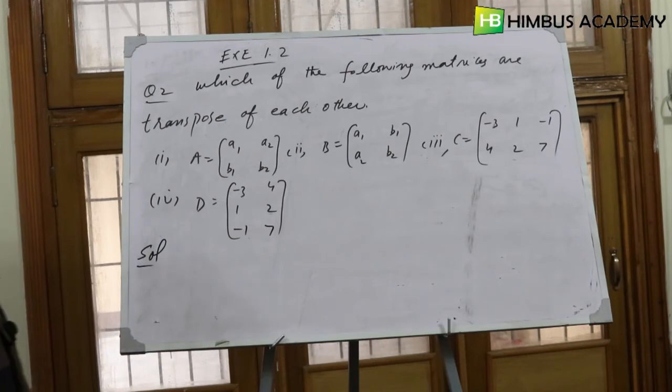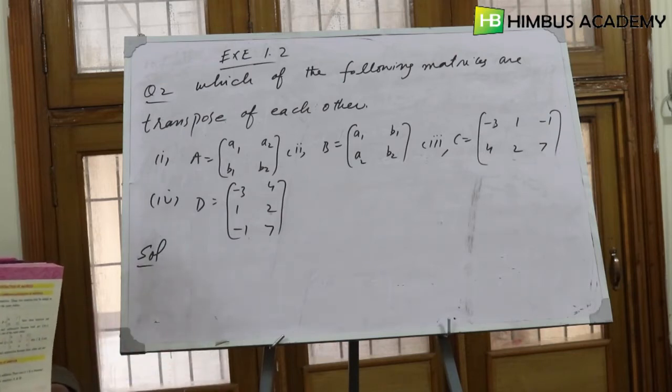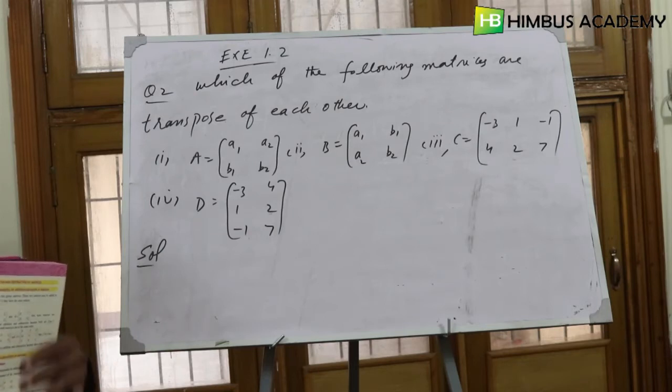And they are asking us which of these matrices are transposes of each other. First, we'll start with A. We'll find the transpose of A, then we'll know which one it is.